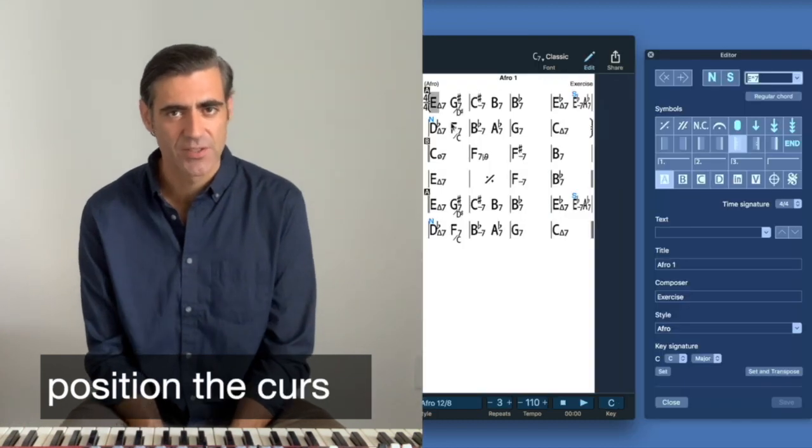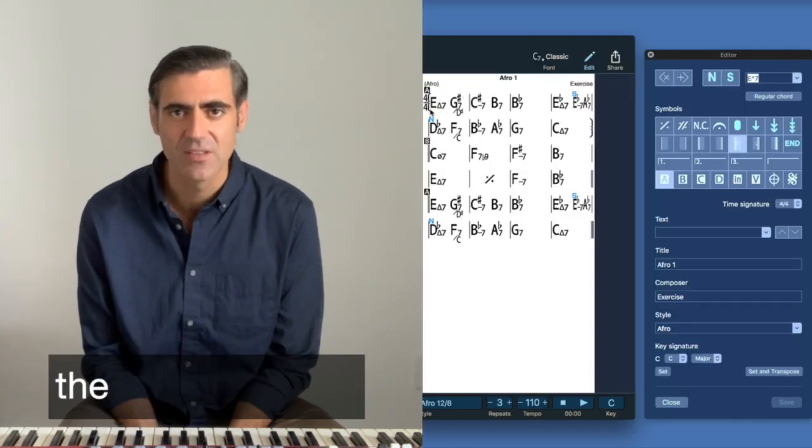Once in the editor, position the cursor at the beginning of the measure where you would like to change the time signature.